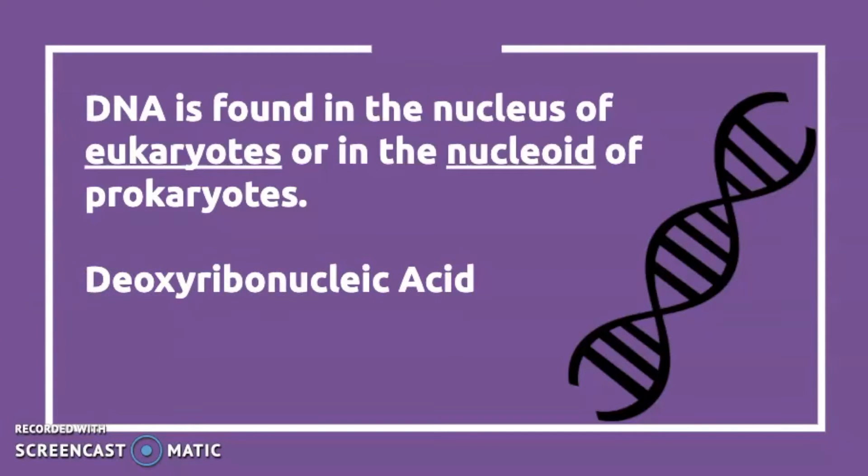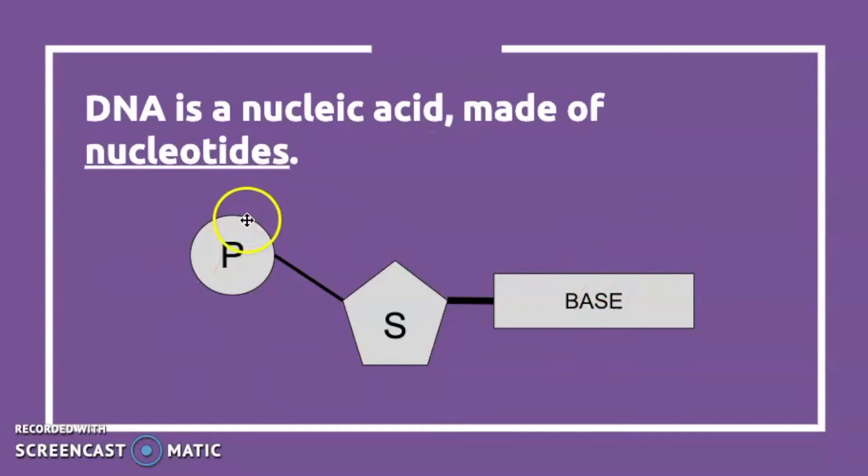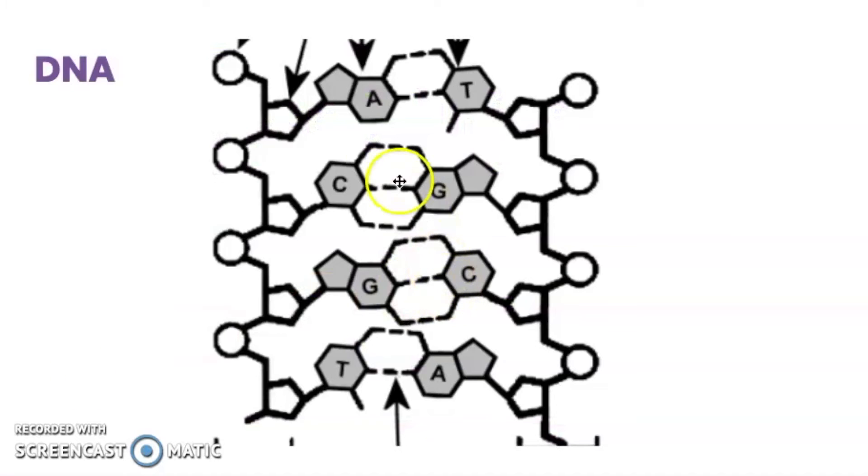We're also going to talk about ribonucleic acid or RNA. So again, one nucleotide contains a phosphate group, our deoxyribose sugar, as well as our base, which can be A, T, G, or C in DNA. Here again, we're looking at many nucleotides put together. Our phosphate here, deoxyribose sugar, and our base.